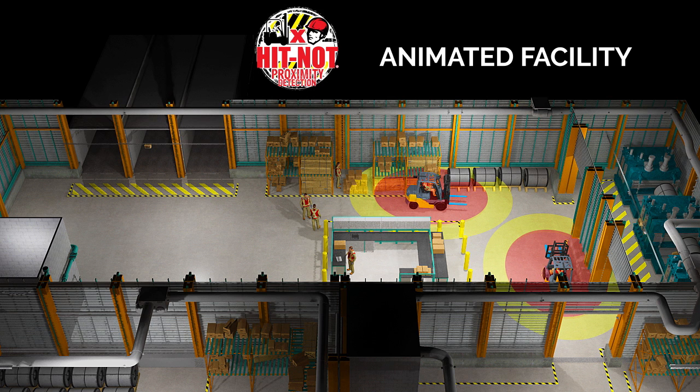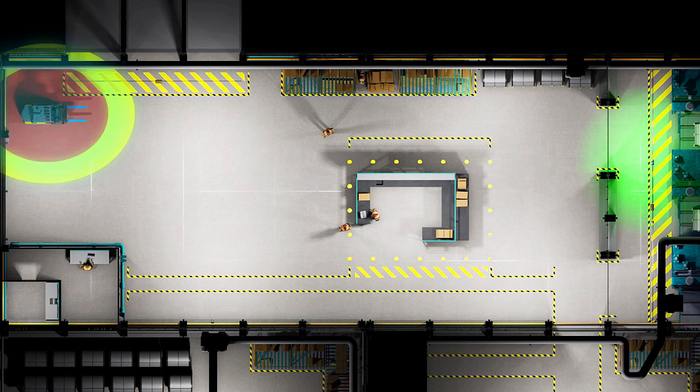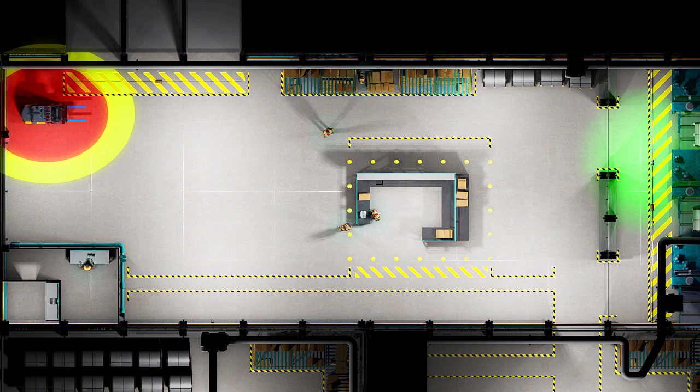The components of the HITNOT system include magnetic field generators, or MFGs, integrated on the forklift, pedestrians outfitted with personal alarm devices, or pads,